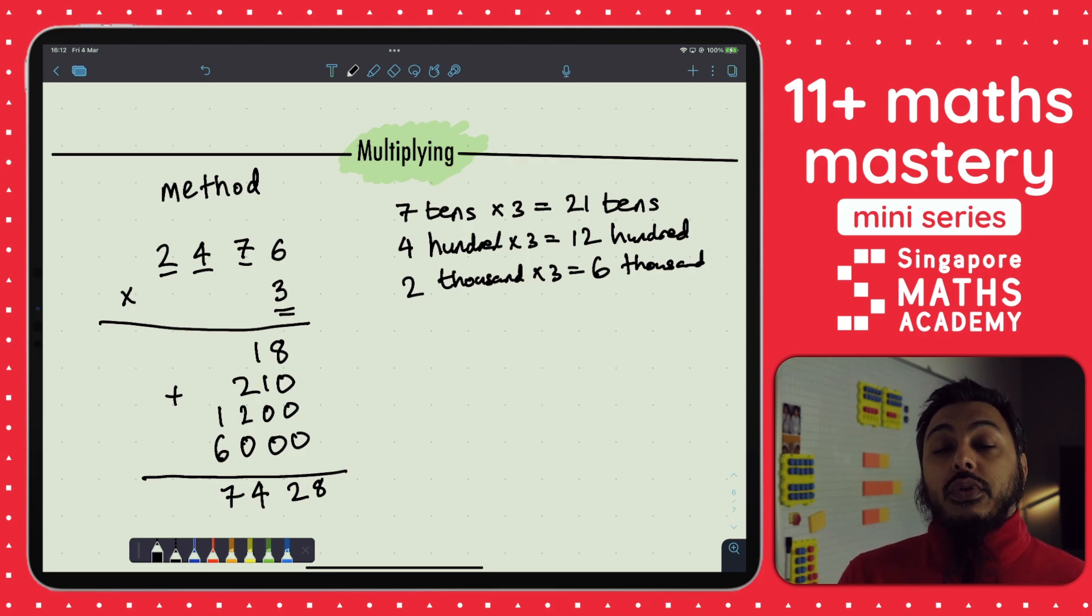So you can see here what I've done is I've broken down each place value - the ones, tens, hundreds, thousands - and I've multiplied each of them by three, and then added those answers together to get the final answer of 7,428.